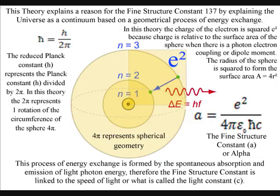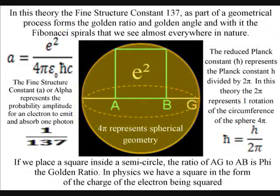To explain the fine structure constant as part of a dynamic geometrical process, we know that the electron is spherical, and with this info we know that we have to square the radius of the sphere to get the surface area.